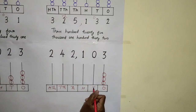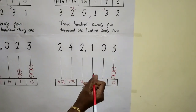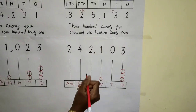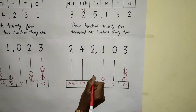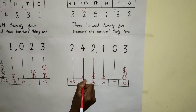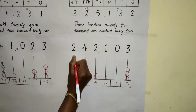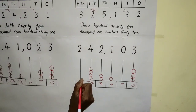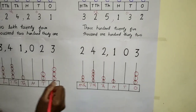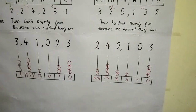Tens place number is zero, so there is no bead in tens place. Hundreds place has one bead. Ten thousands place has two beads. Hundred thousands place has three beads. So this is the way to represent a number on Abacus.